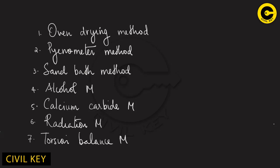This method is the first of 7 methods. The first method is the picnometer method. The picnometer method is used for specific gravity of soil. Other methods include the sand bath method, alcohol method, calcium carbide method, radiation method, and torsion balance method.